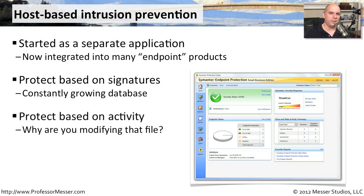The advantage of host-based intrusion prevention is much greater detail about what's happening on the device. You can see if applications are trying to change a particular file. For example, if an application gets through your network-based and host-based intrusion prevention without matching any signatures, but then tries to modify the host file on your web server, that's going to throw a flag. The software will stop and prevent that modification — there should never be anything on your servers doing that.